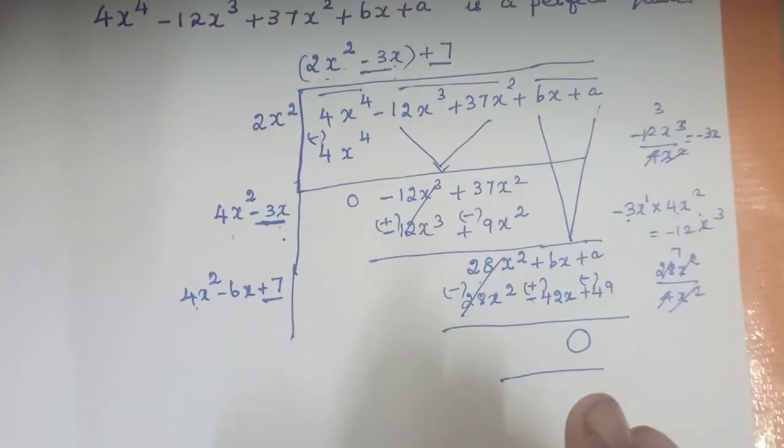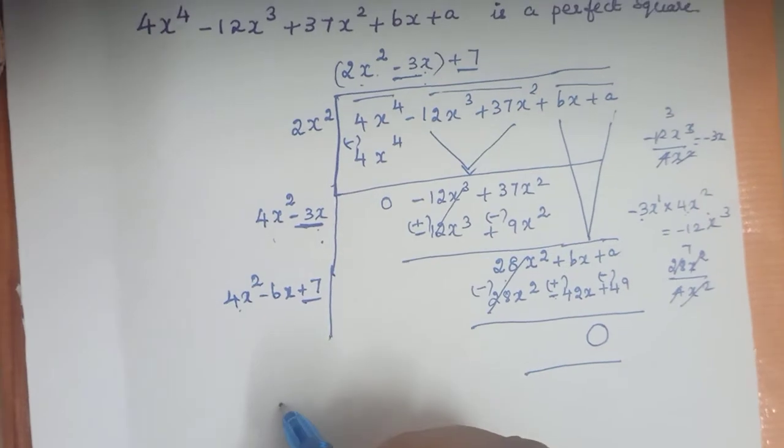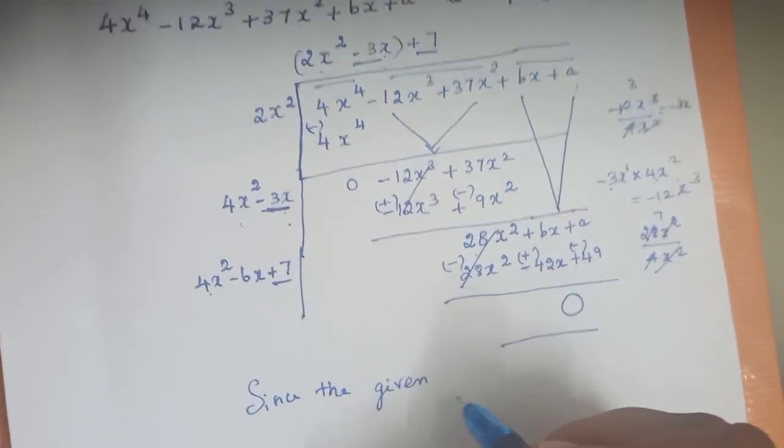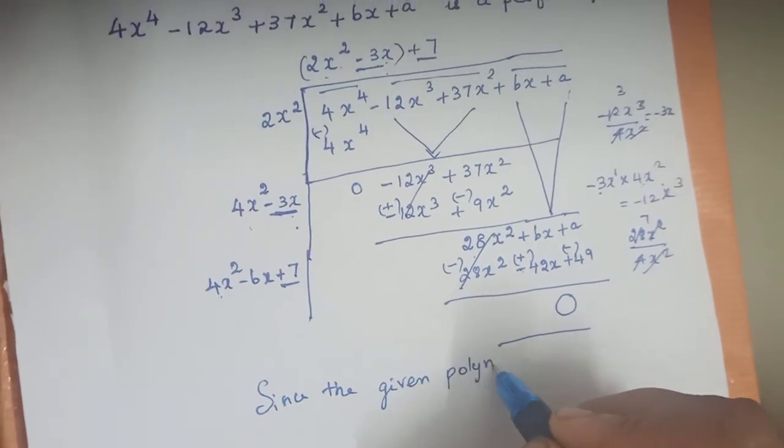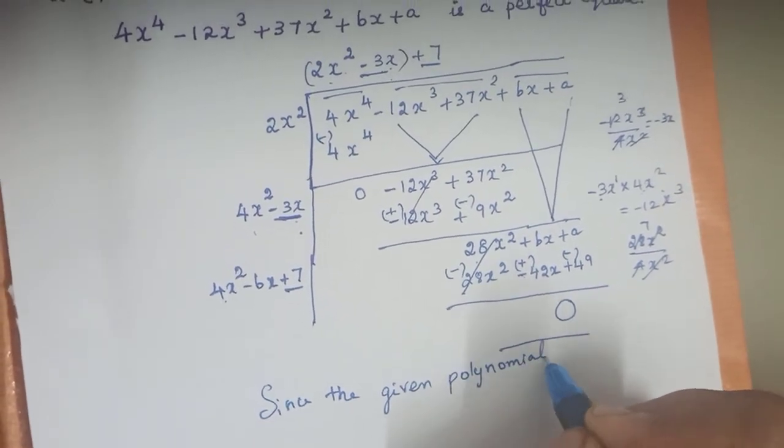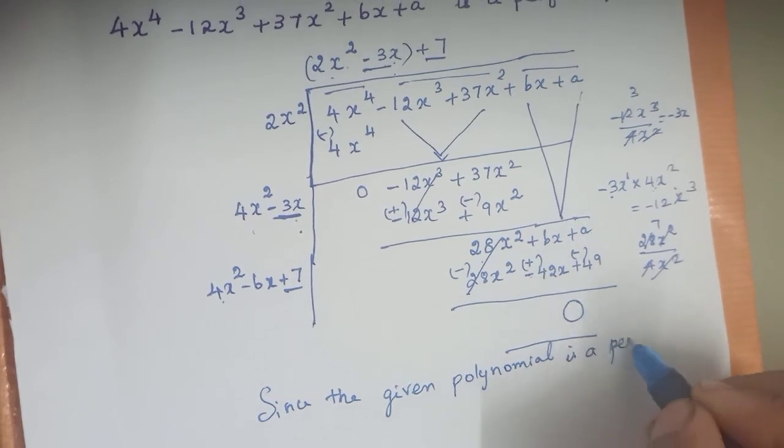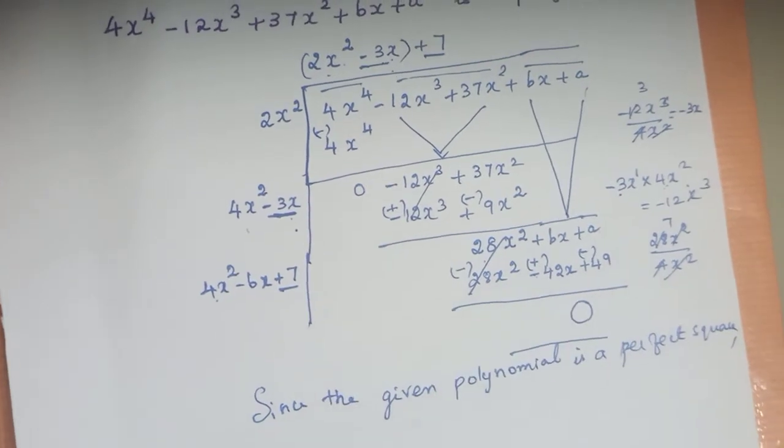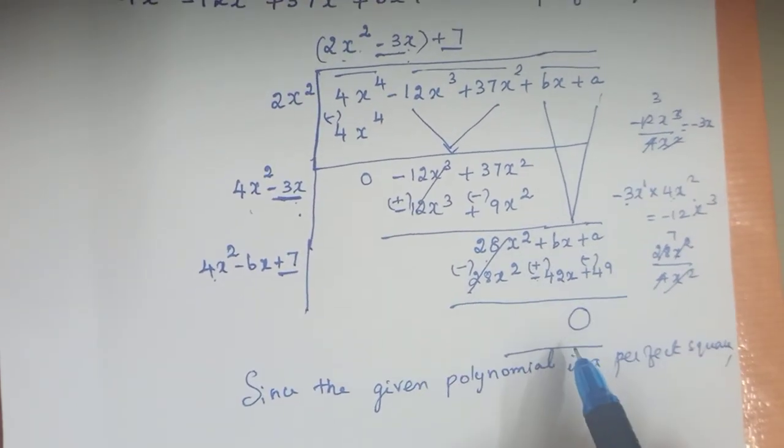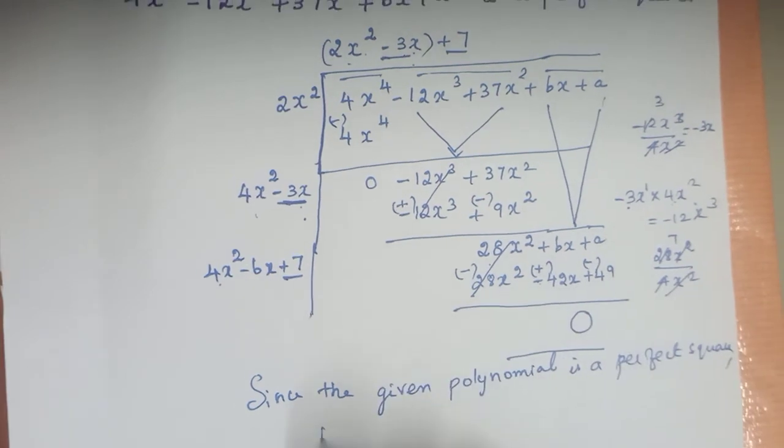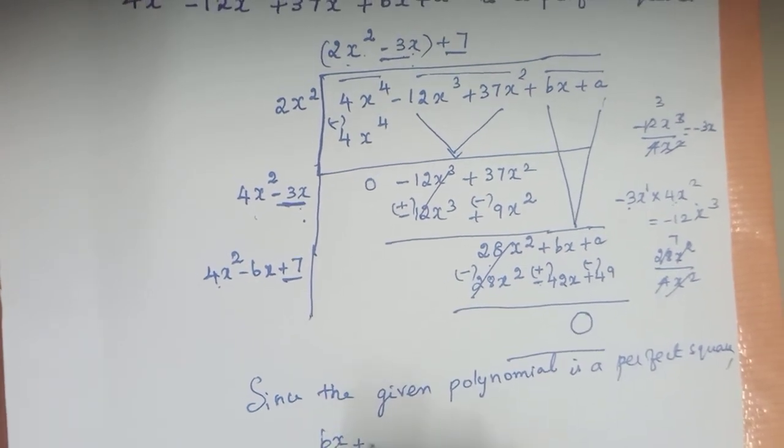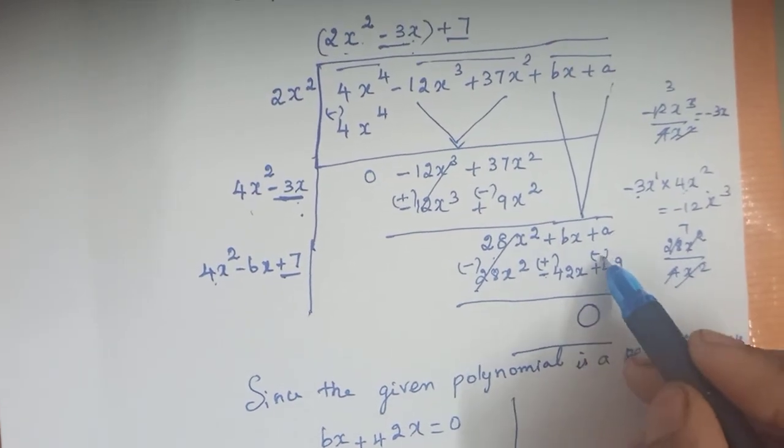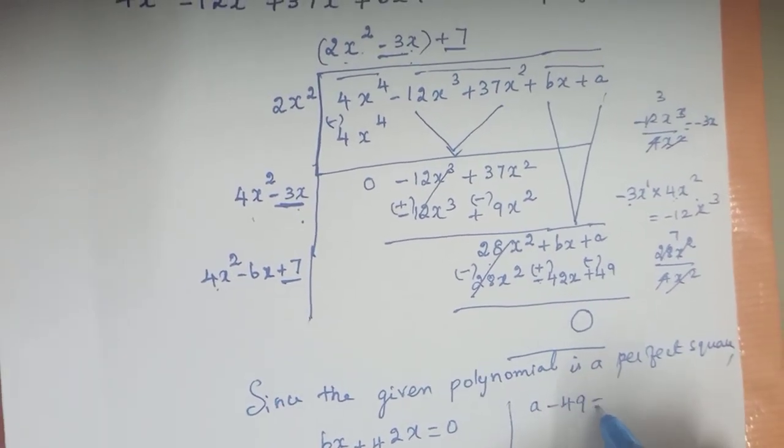Since the given polynomial is a perfect square, this step is very important. Perfect square means the remainder must be 0. bx plus 42x equals 0, and a minus 49 equals 0.